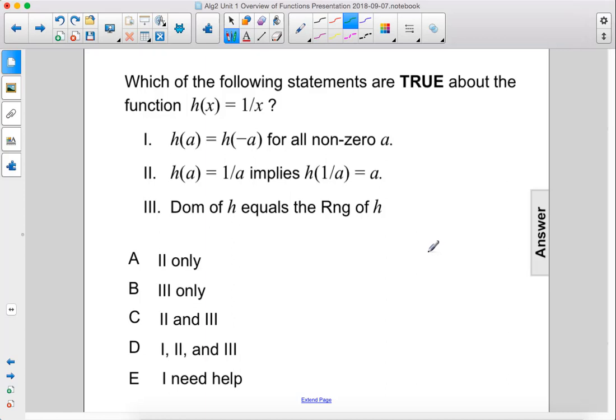Which of the following statements are true about the function h of x equals 1 over x? Statement one: h of a equals h of negative a for all non-zero a. Let's test this out.